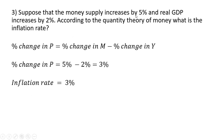Suppose that the money supply increases by 5% and real GDP increases by 2%. According to the quantity theory of money, what is the inflation rate? The inflation rate equals the percentage change in the money supply minus the percentage change in real GDP. So with the money supply increasing 5% and real GDP increasing 2%, the difference is the inflation rate: 3%.